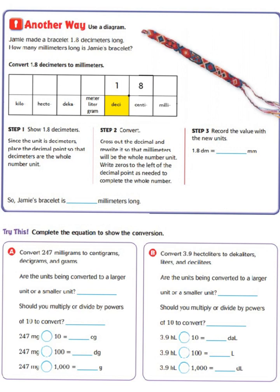So step one is to show 1 and 8 tenths decimeters. Since the unit is decimeters place the decimal point so that the decimeters are the whole number unit. So we're going to place our decimeters so that the whole number unit and that as you can see is going to be right there.